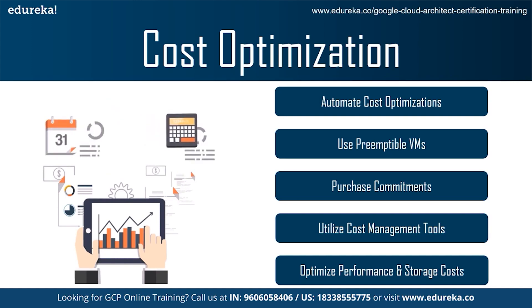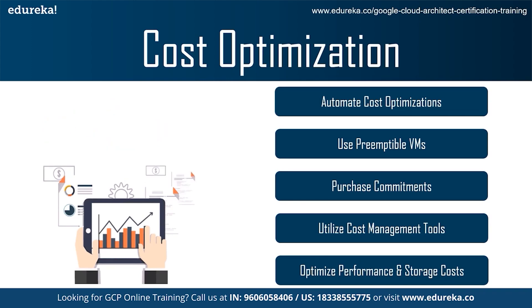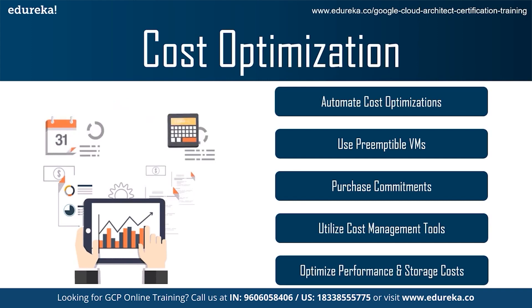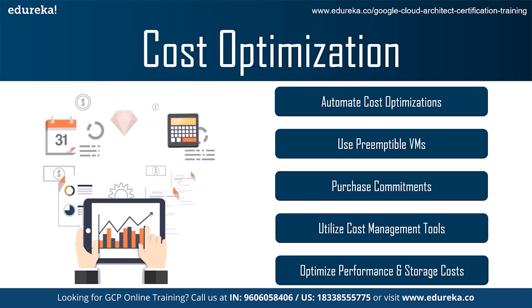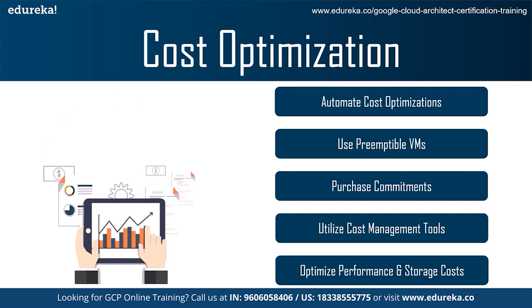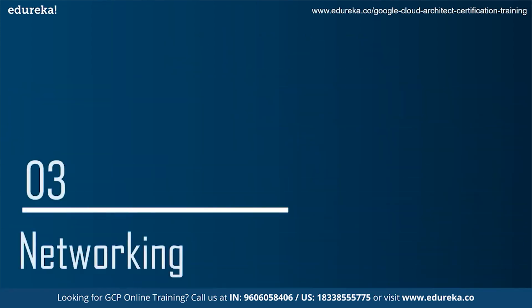The last best practice in cost optimization is to optimize performance and storage costs. In the cloud, where storage is billed as a separate line item, paying attention to storage utilization and configuration can result in substantial cost savings. Storage needs, like compute, are always changing, so the storage class you picked when you first set up your environment may no longer be appropriate for a given workload.